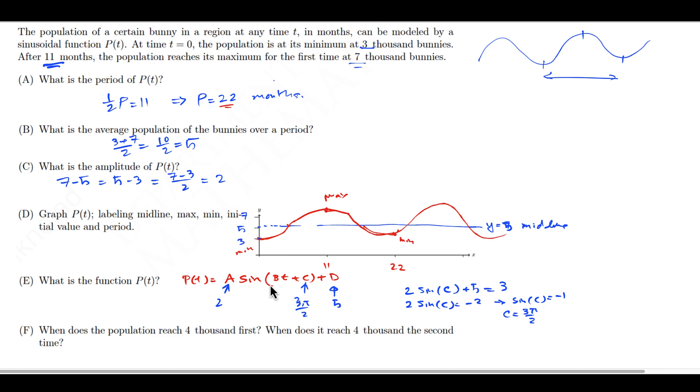Now the last thing is that I have to find B. Remember, B times the period is supposed to equal to 2π. Therefore, B is equal to π over 11. The general formula: B is going to be equal to 2π divided by period. So the function is P(t) equal to 2 sine of π over 11 T plus 3π/2 plus 5.